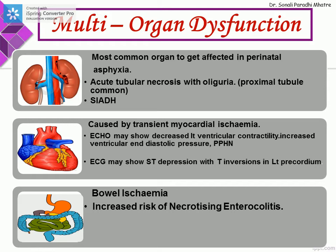The ECG may show ST depression with T-wave inversions in the left precordium. In the GI tract, the child may have bowel ischemia and increased risk of necrotizing enterocolitis. NEC is more common in preterm babies, but term babies with perinatal asphyxia are also at high risk. Hematological disorders may include DIC or isolated thrombocytopenia. Hepatic injury includes isolated increase in hepatocellular enzymes, and if severe, depletion of glycogen stores causing hypoglycemia or altered drug elimination.